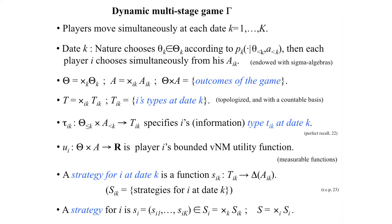When you find out your type and invert that function, the set of histories that could have led to that type is your information set — the histories you can't distinguish between. No information corresponds to a constant type function. Perfect information: your type is simply the vector of actions and states chosen. Anything in between is also possible.